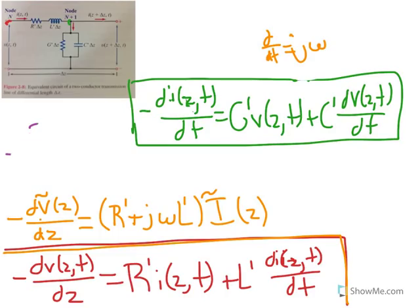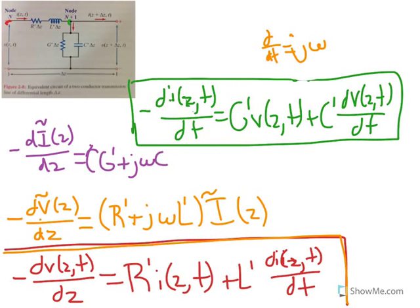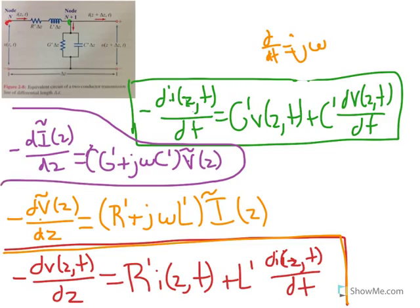And now we can rewrite the other one. We get negative dĨ(z)/dz equals the quantity (G' + jωC') times the voltage phasor. So the purple and orange quantities are our phasor versions of our transmission line equations, and the green and red are our time domain equations.